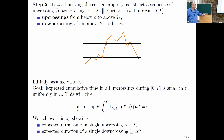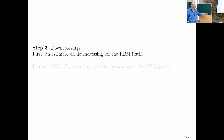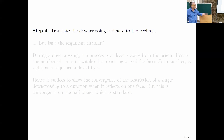The first step in this program — third step overall — is down-crossings. First, an estimate on down-crossings of the RBM itself. There is a lemma in Varadhan-Williams showing that the expected time of a down-crossing for the RBM — the limiting process — is bounded below by epsilon to the alpha. We're going to use it in step four to translate to a down-crossing estimate for the pre-limits.